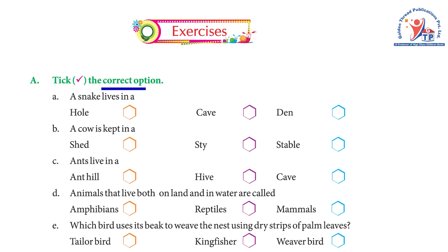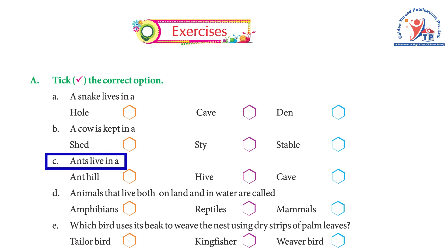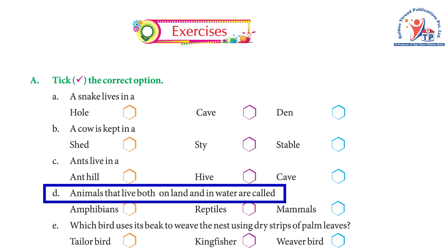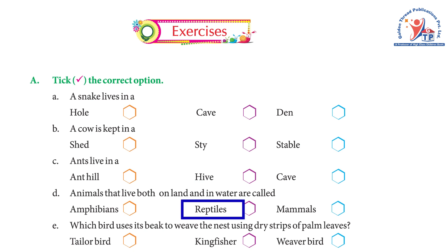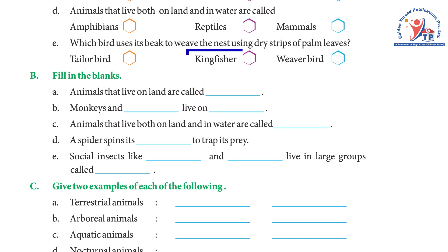Exercise A — Tick the correct option: (a) A snake lives in a hole or cave — answer: hole. (b) A cow is kept in a shed, sty, or stable — answer: shed. (c) Ants live in an anthill, hive, or cave — answer: anthill. (d) Animals that live both on land and in water are called amphibians, reptiles, or mammals — answer: amphibians. (e) Which bird uses its beak to weave a nest using dry strips of palm leaves: tailor bird, kingfisher, or weaver bird — answer: weaver bird.